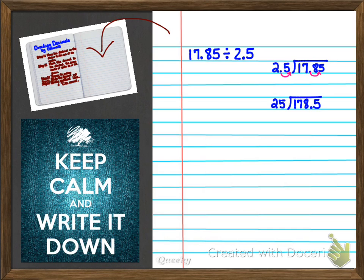We're going to recopy our problem neatly with our decimal in its new spot. We're going to slide that decimal up and we're going to begin to divide. Twenty-five goes into 178 seven times. Seven times 25 gives us 175. So now I'm going to subtract and I get three and I brought down my five. Now I start all over again. Twenty-five goes into 35 just one time. One times 25 is 25. Subtract, I get ten.